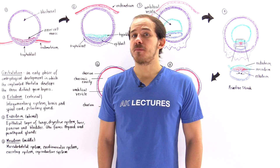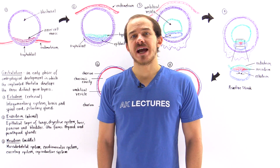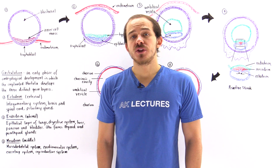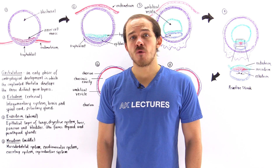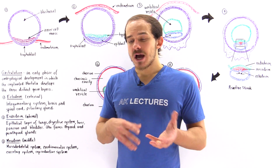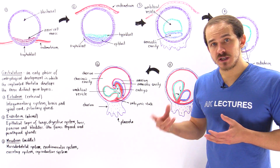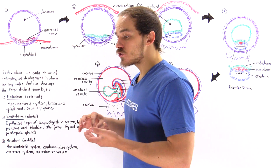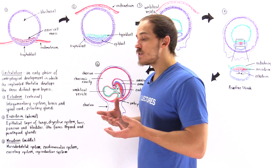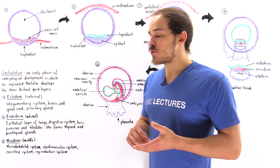Following the implantation of the blastocyst into the endometrium of the uterus, another process known as gastrulation begins. Gastrulation is an early embryological process in which the three distinct germ layers are formed. These germ layers include the ectoderm, the endoderm, and the mesoderm. The cells of each one of these germ layers eventually give rise to specific organs, structures, and systems found within the adult human body.